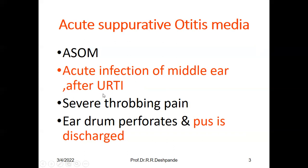What are the symptoms or clinical features? There is severe throbbing pain in otitis media before the pus drains out. The pus gets accumulated, causing severe pain. Then the pus pushes the tympanic membrane — the ear drum — causing it to perforate, and pus is discharged into the external ear.